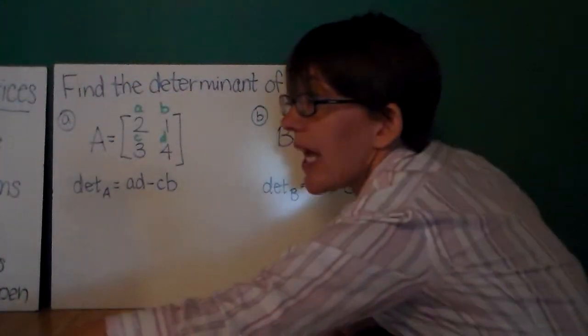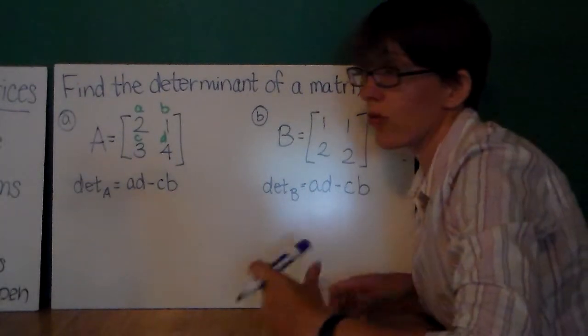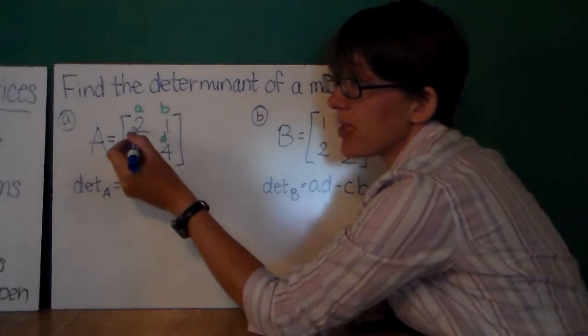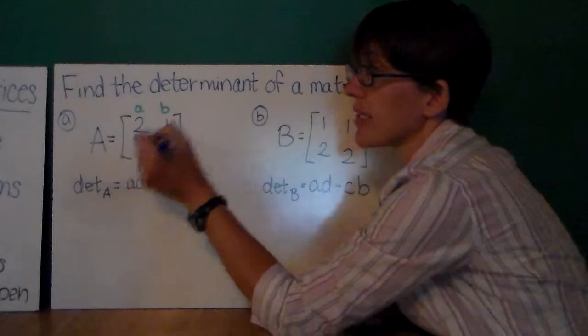So, let's first look at how to find the determinant of a matrix. A determinant is a scalar quantity. So, here's my first matrix: 2, 1, 3, 4, and I've labeled the numbers A, B, C, and D.